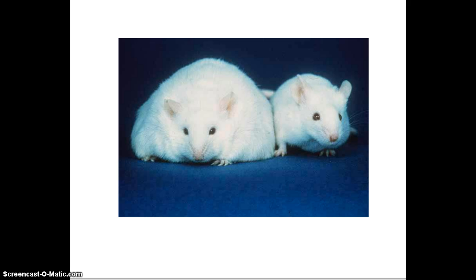Ablation or damage to structures in the brain is a common use of the stereotaxic apparatus. One of the things that I did when I was a student many years ago was to damage or ablate the ventromedial hypothalamus, or the VMH. This is a nucleus in the hypothalamus that was thought to be important for hunger and satiation, and what we found was that animals with damage to the VMH gained a lot of weight — they ate and ate and ate.